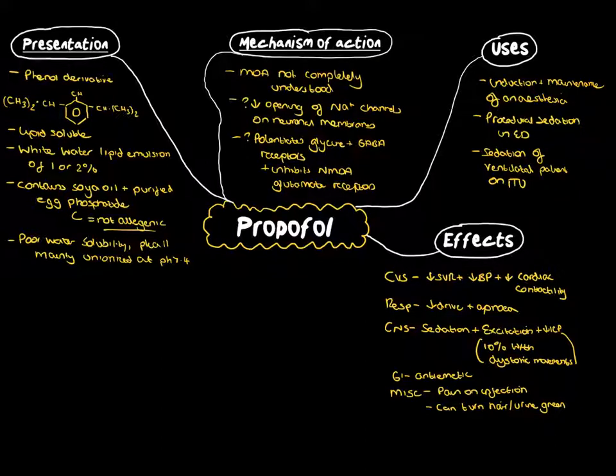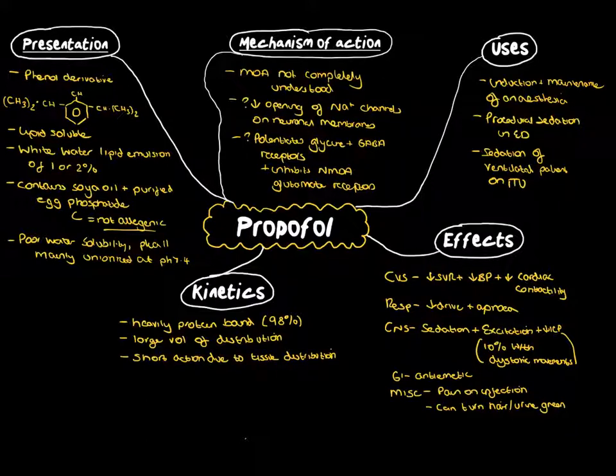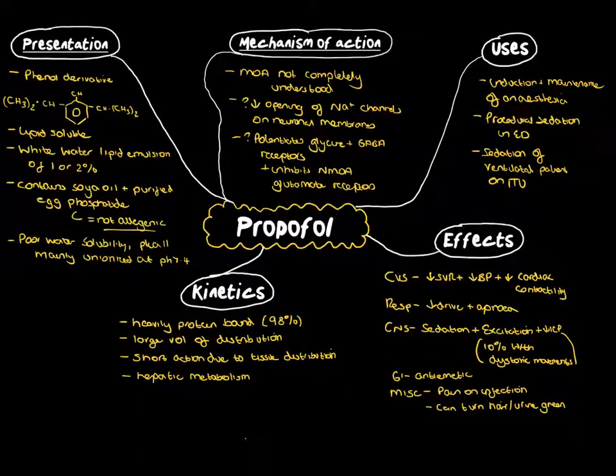When we think about the pharmacokinetics of propofol, it's a heavily protein-bound drug. It's 98% protein-bound, and that means it's got a very large volume of distribution. Its action is short due to this rapid distribution into the tissues within the body. It's largely hepatically metabolized into glucuronide and quinol, 40% and 60% respectively, and then the metabolites are excreted in the urine.